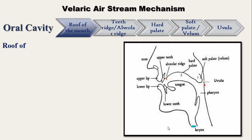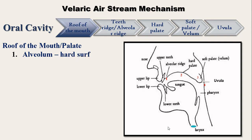The roof of the mouth is also called the hard palate. Immediately after the front teeth, in the upper jaw, there is a hard surface on the roof of the mouth. This is called the teeth ridge. It is also called the alveolar ridge, or shortly, the alveolum.